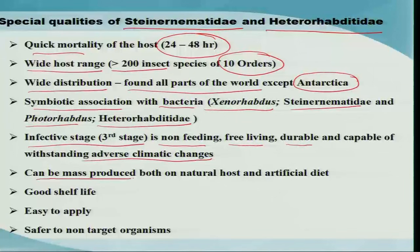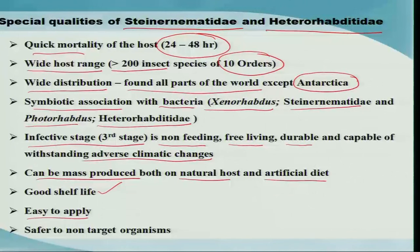Another great advantage is that EPNs can be mass produced both using natural hosts and artificial diet. They also have a good shelf life, are easy to apply using conventional sprayers, and are safer to non-target organisms. In fact, entomopathogenic nematodes have been exempted from the Environmental Protection Act because of their safety to non-target organisms.